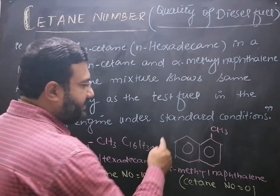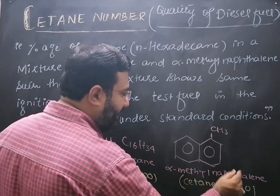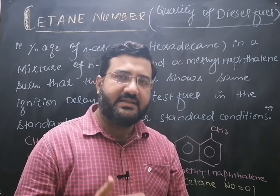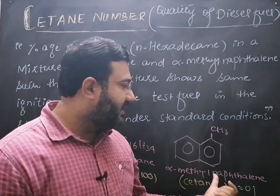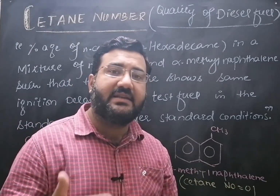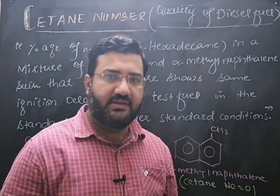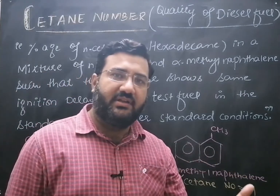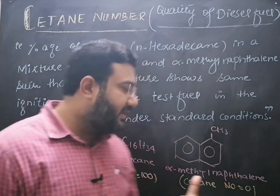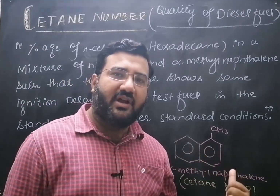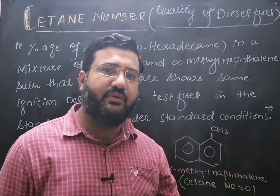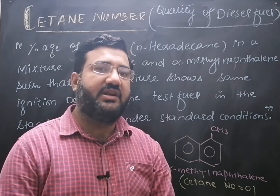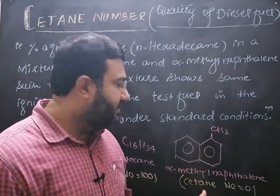Alpha-methyl naphthalene is an aromatic hydrocarbon and is arbitrarily given a cetane number equal to 0, which means it will require the maximum time for its ignition in the engine. So straight-chain hydrocarbons are easily ignitable — they require lesser time for ignition and have high cetane number — while aromatic hydrocarbons are not easily ignitable, require large time for ignition, show large ignition delay in the engine, and therefore have low cetane number.